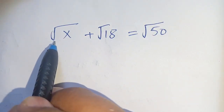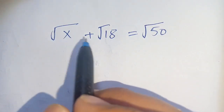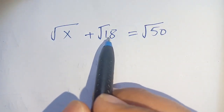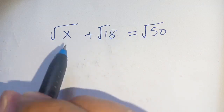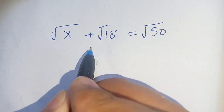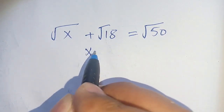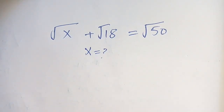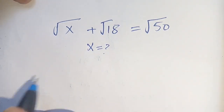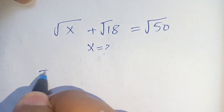Hello everyone. How to solve square root of x plus square root of 18 is equal to square root of 50? We have to find the value of x which satisfies this equation. Let us solve this.